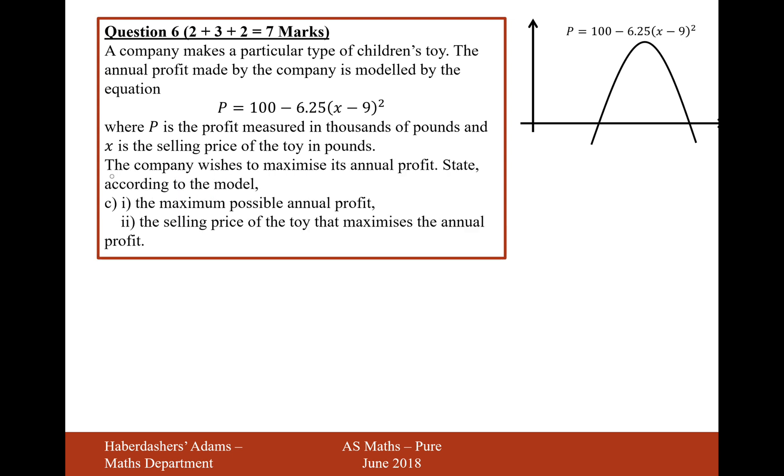And moving on to the final part C, the company wishes to maximize its annual profit, state according to the model, part i is the maximum possible annual profit, so that would be £100,000, because if we set the squared element to be 0, then you're going to be subtracting nothing, so you're going to earn £100,000, or have profit of £100,000. The selling price of the toy at this maximum annual profit, that would be x equals £9.